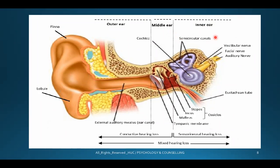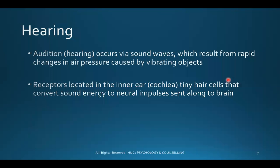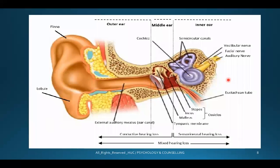The semi-circular canal in the ear serves a different purpose — it is responsible for body balance. If there is an imbalance in the ear, you won't be able to stand or balance your body. So the middle ear contains the tympanic membrane, malleus, incus, and stapes, and the inner ear contains the cochlea, semi-circular canal, and auditory nerve.